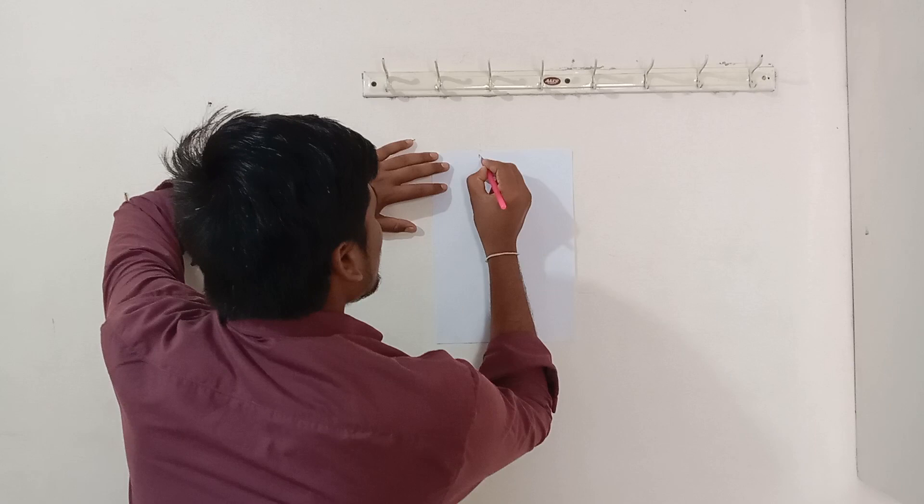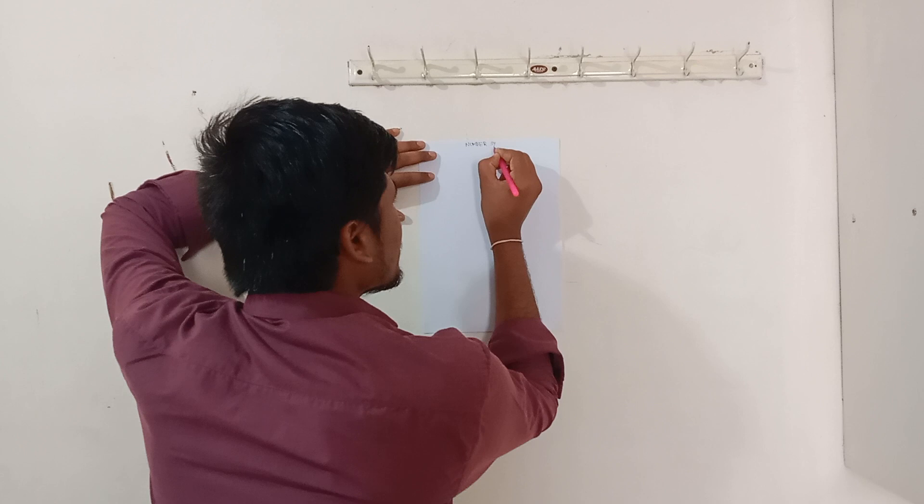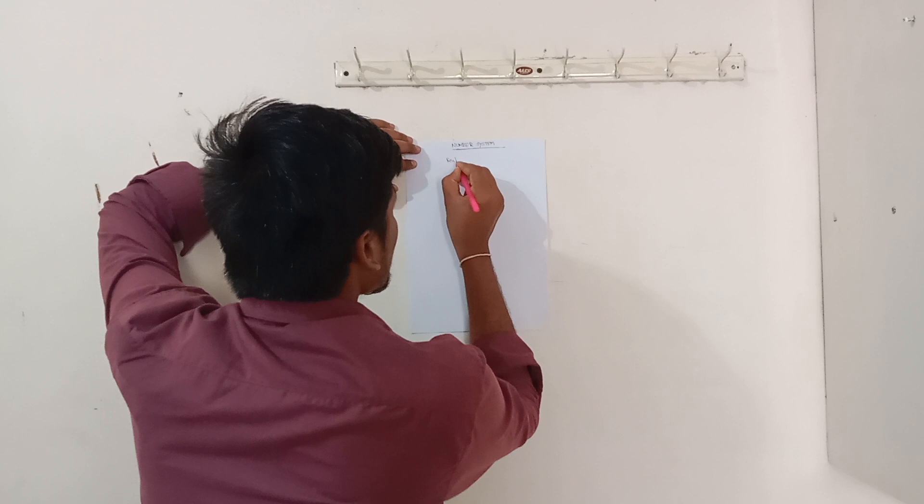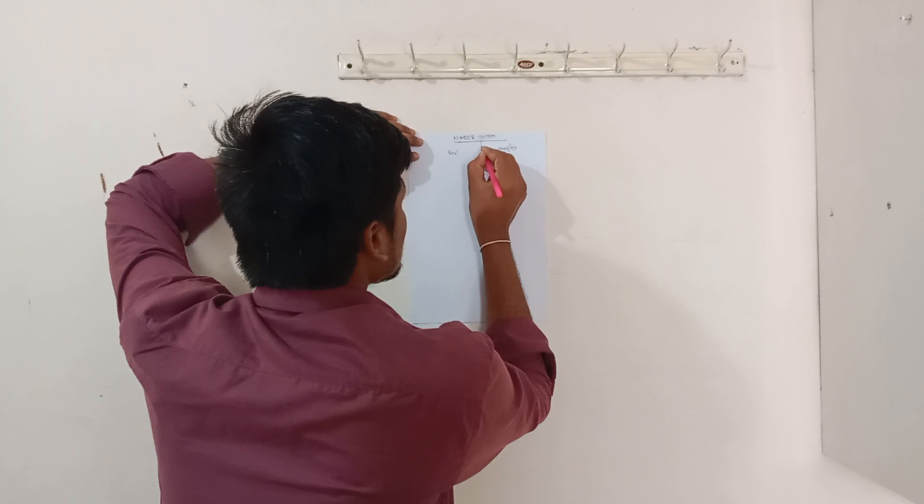The number system can play a key role in mathematics. The number systems are divided into two types: real numbers and complex numbers.